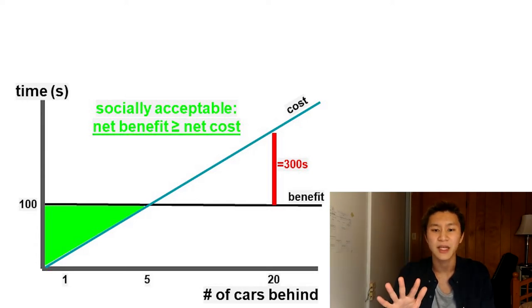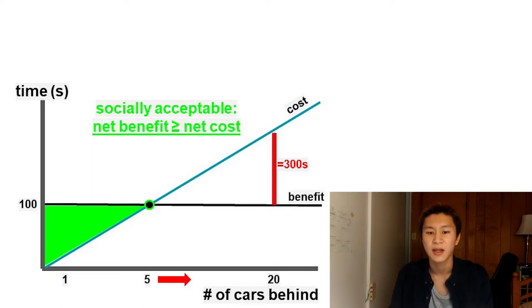When there's 5 cars behind me, the 100 seconds I save turning left equals the 20 seconds delay times 5 cars that I waste for other people.